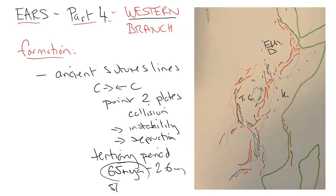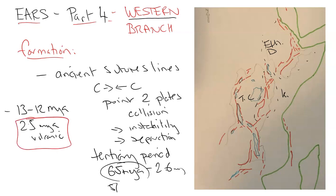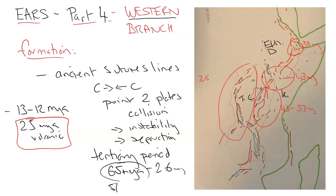The western branch is around 13 to 12 million years old, though some researchers say it could be around 25 million years old based on volcanic deposits. However, even at 25 million years old, that is much younger than the eastern branch — this area here is around 43 million years old, up here is about 30 million years old, and this part is between 43 and 37 million years old. So even at 25 million years, the western branch is considerably younger than the surrounding rift valley system.